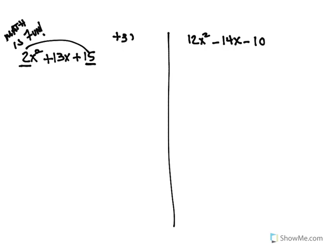So we get a plus 30. We need factors of 30 that can give us a 13. So you list your factors of 30.